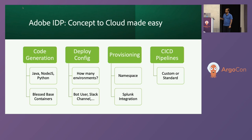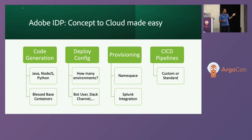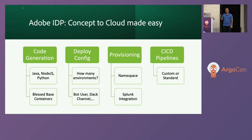The next step is your deployment configuration — this is where you decide how many environments you want, and submit deployment statuses to Slack channels, things like that. Then we provision based on that deployment configuration, and the end result is a CI/CD pipeline. If you're interested, we have an Adobe IDP workshop tomorrow, and we'll also talk briefly about Adobe IDP in the keynote this evening.